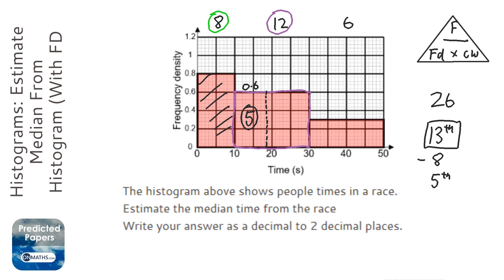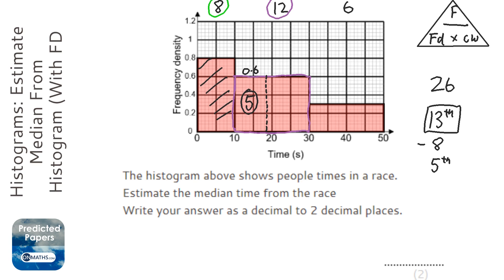All I need to do here is the frequency, which is 5, divided by the frequency density, which is 0.6. So 5 divided by 0.6 gives me the answer of 8.33 recurring.